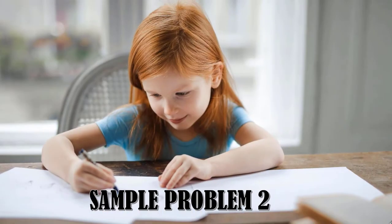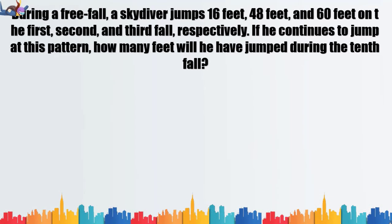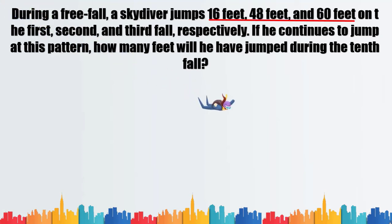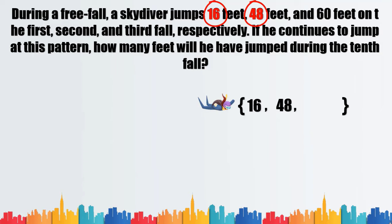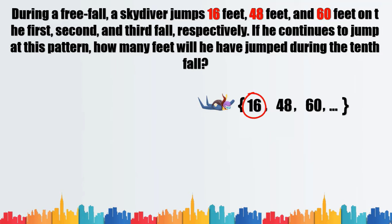Problem number two: during a free fall, a skydiver jumps 16 feet, 48 feet, and 80 feet on the first, second, and third fall respectively. If he continues to jump at this pattern, how many feet will he have jumped during the 10th fall? First, let us create our set. The first term a sub one is 16.